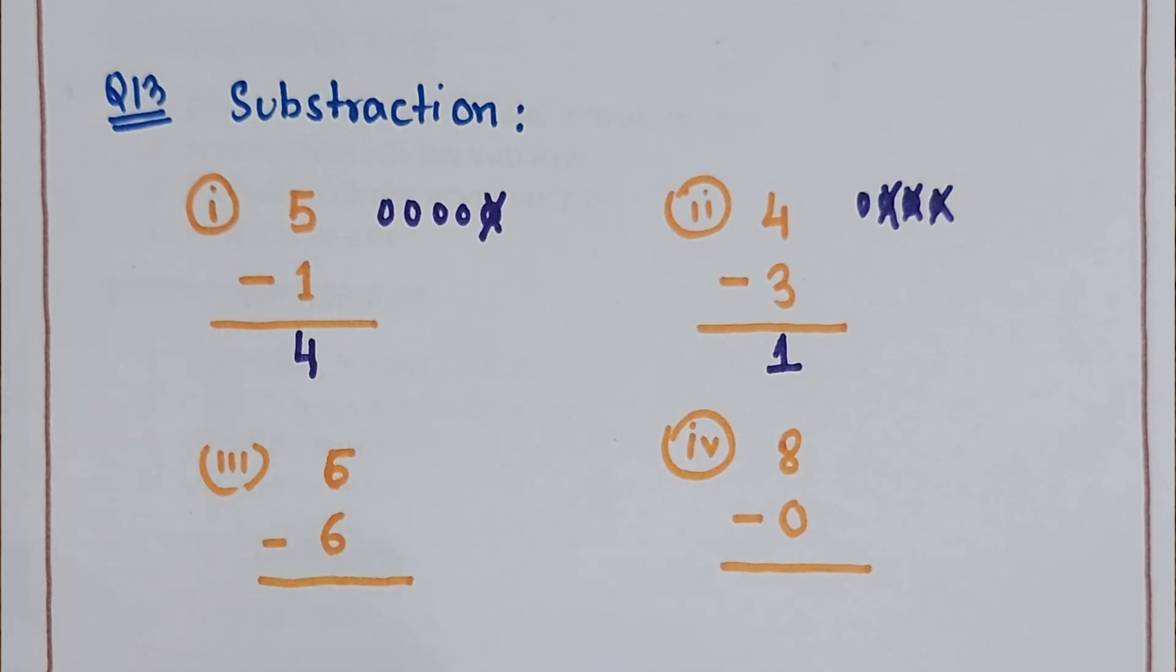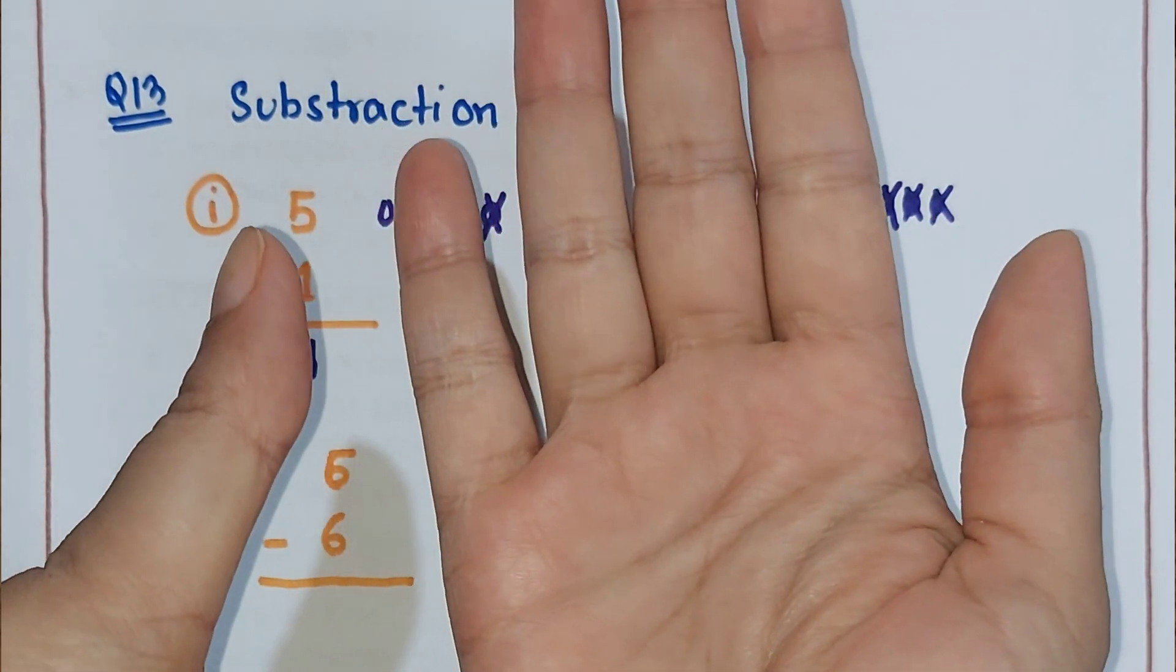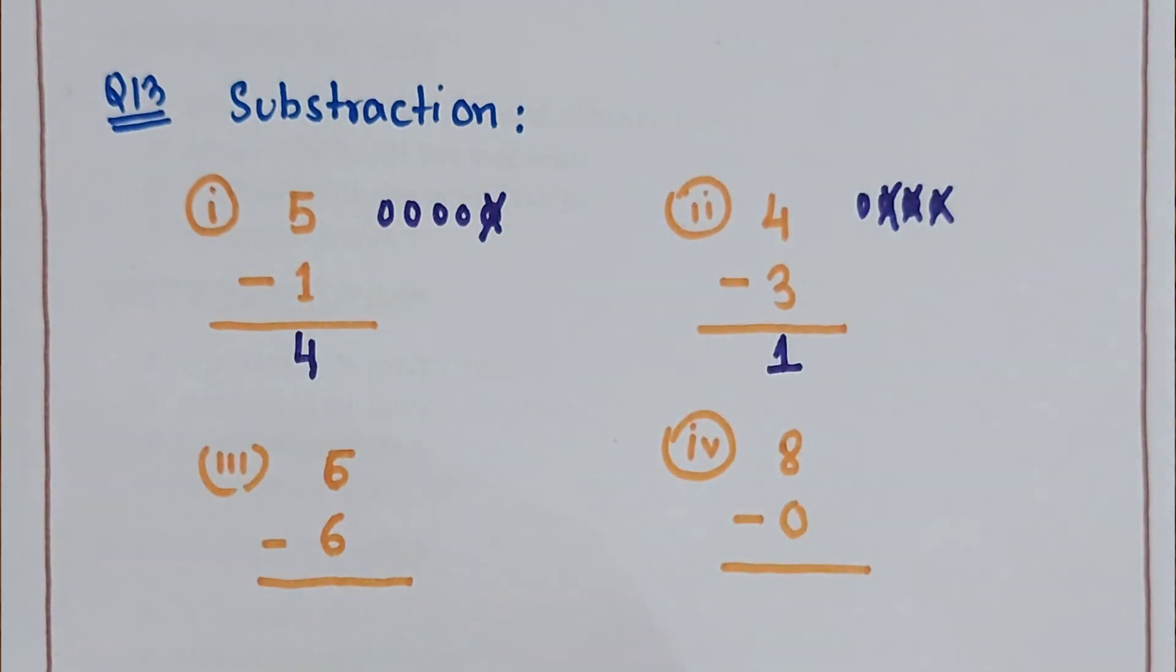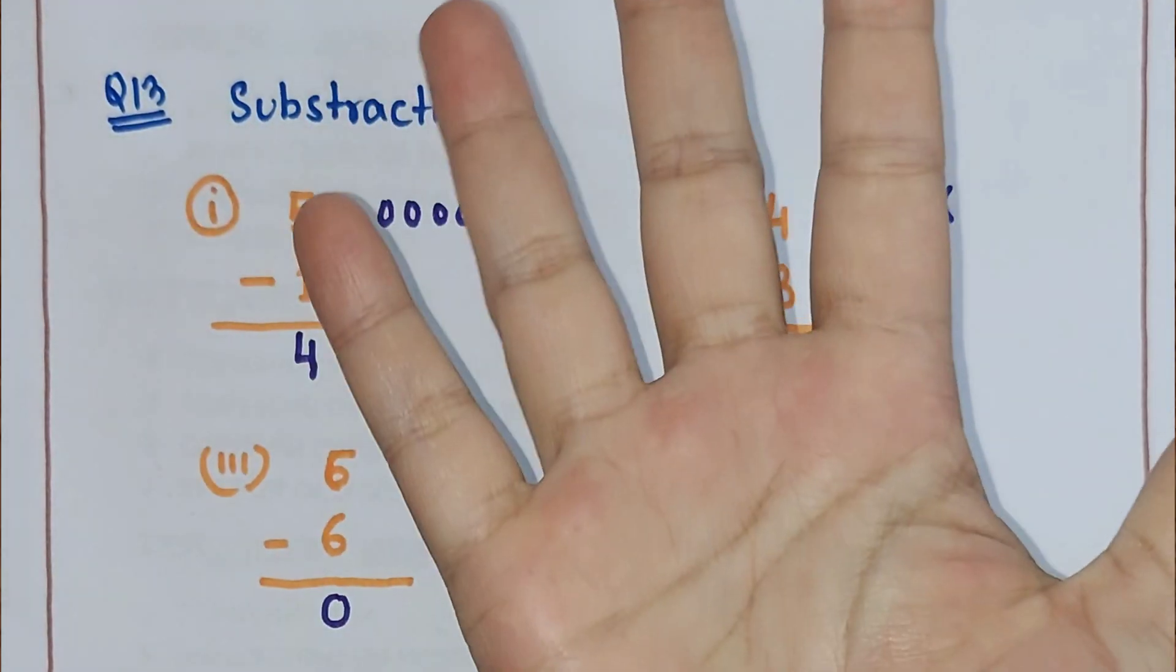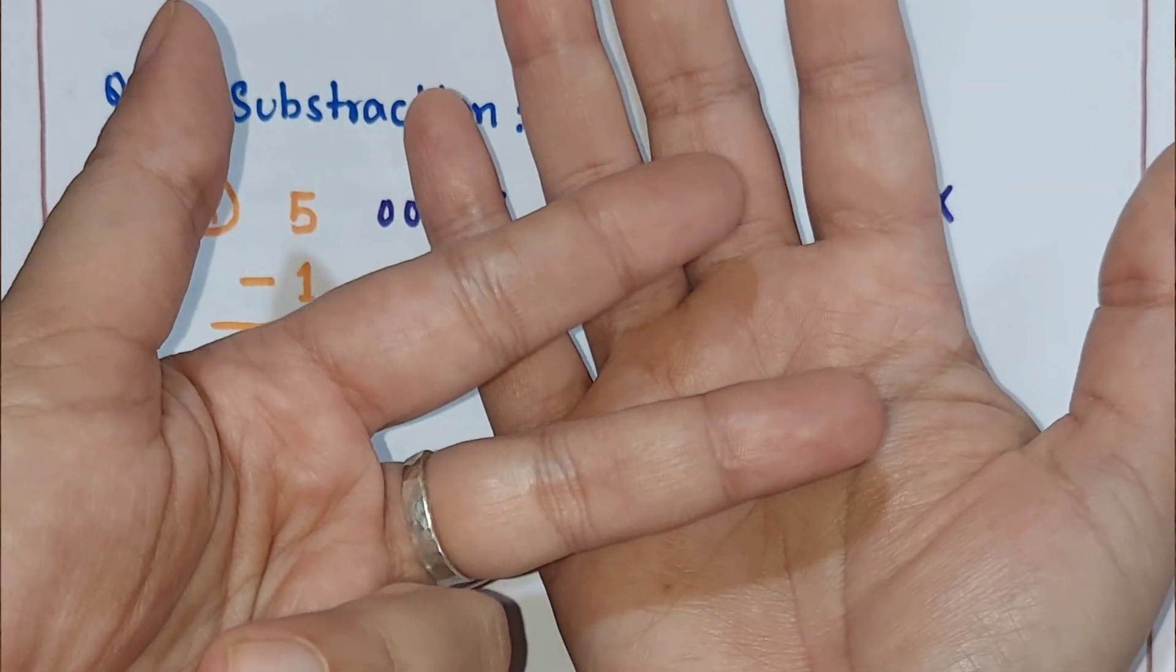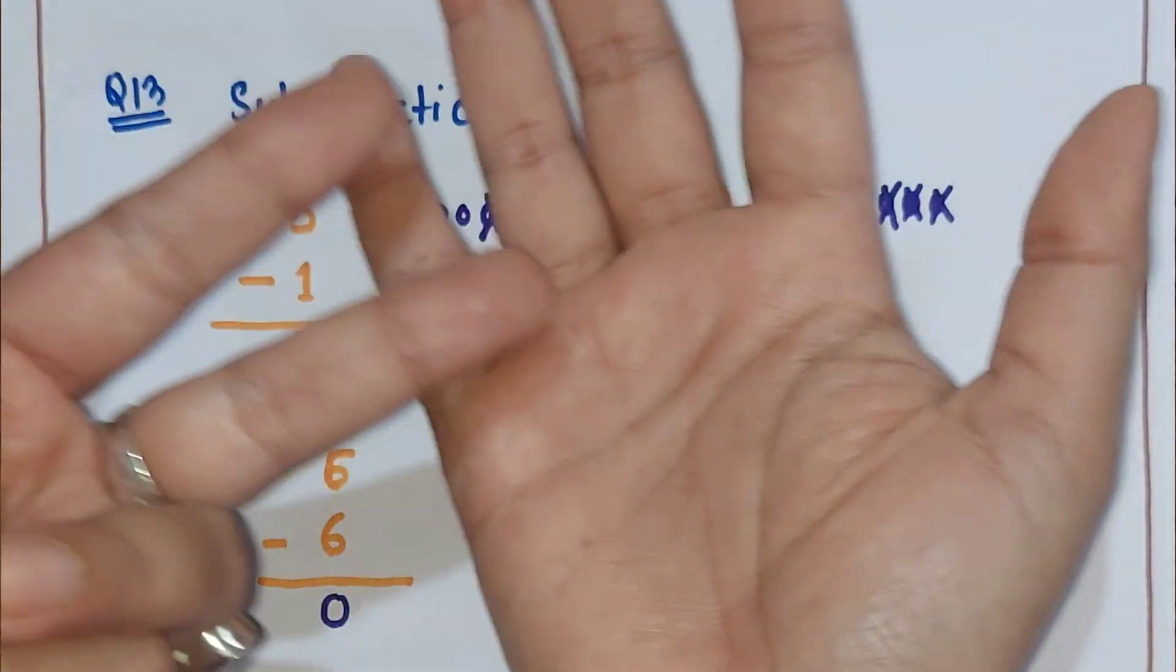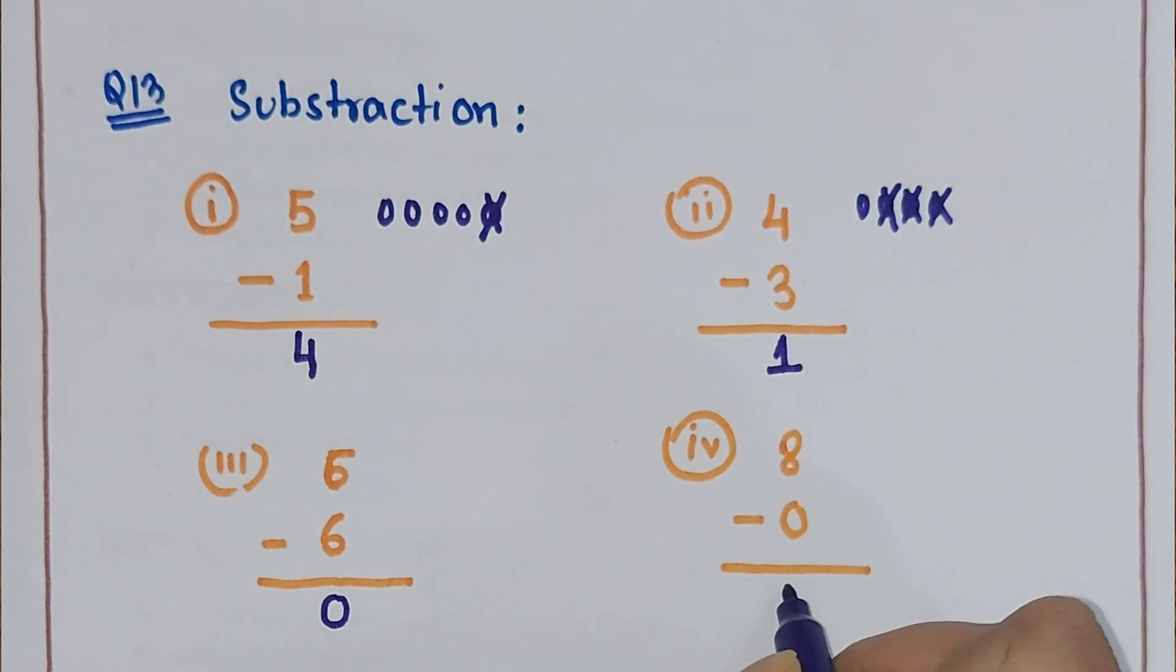Next, we'll do it with fingers. Six fingers up and six fingers down. How many remain? Zero. Next, eight fingers up and zero fingers down. How many remain? Eight. The answer will be eight.